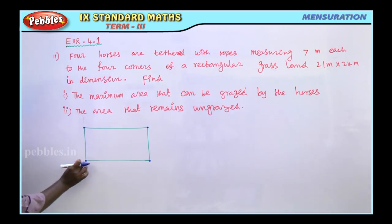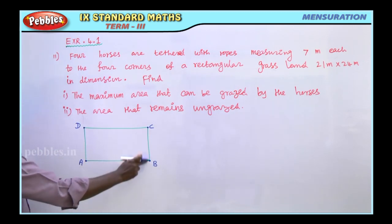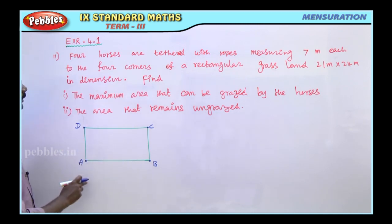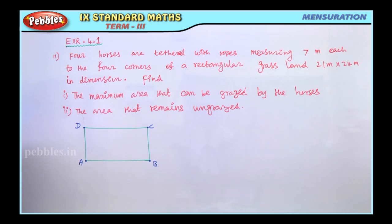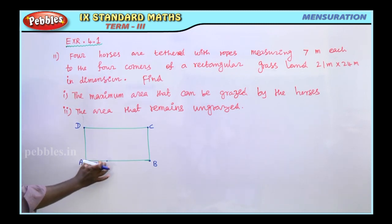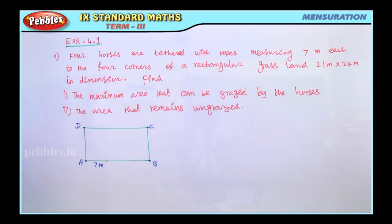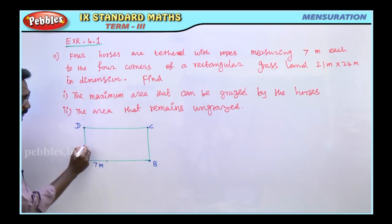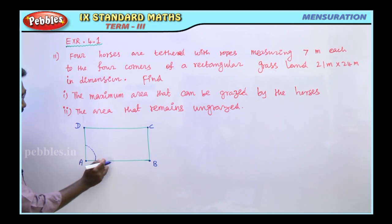So the four corners are labeled A, B, C, and D — four points, one horse at each point. The ropes are measuring 7 meters each, so each horse is tethered with a rope of length 7 meters. The length of the rope is 7 meters.